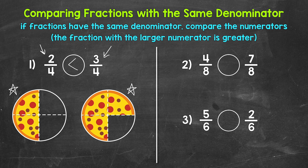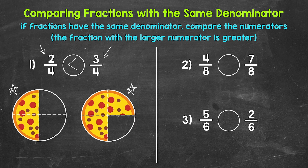Let's move on to number two where we have four-eighths and seven-eighths. Reading this from left to right: four-eighths is greater than, less than, or equal to seven-eighths. If we have the same sized whole divided into eight equal pieces, which is greater — four out of the eight total pieces or seven out of the eight total pieces? Seven out of the eight total pieces — seven-eighths is greater. We have the same denominator, eight, so we just compare the numerators. Seven is greater than four, so our symbol opens up towards seven-eighths. Reading this from left to right: four-eighths is less than seven-eighths.